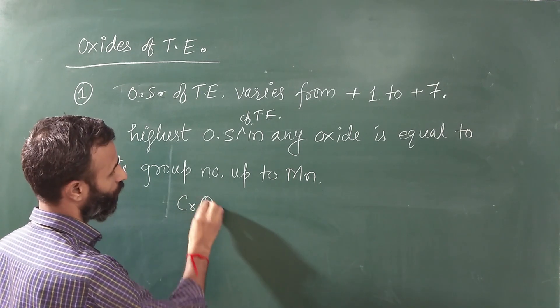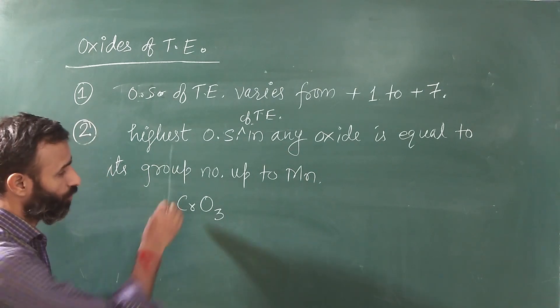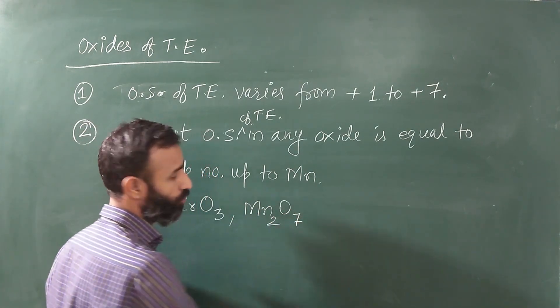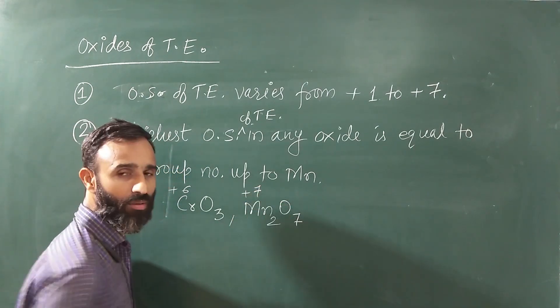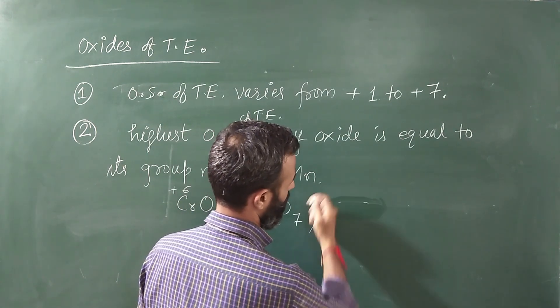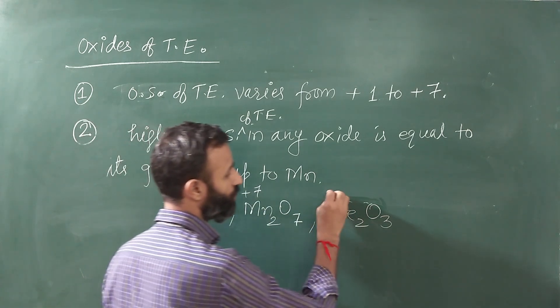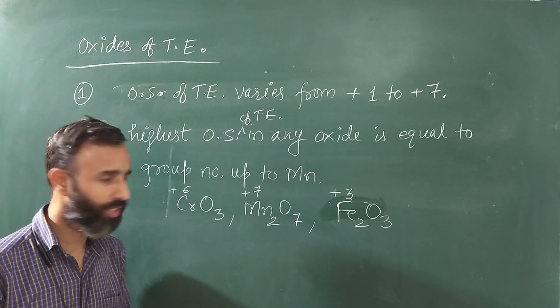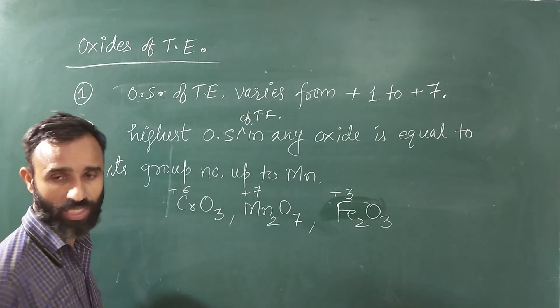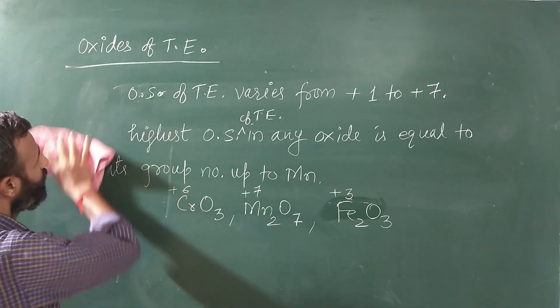Chromium's group number is 6. So chromium's highest oxide is CrO3, where chromium has oxidation number +6. But manganese is Mn2O7, where manganese has oxidation number +7. But iron is only Fe2O3, maximum oxidation number +3. So up to manganese it equals group number, but after that only Fe2O3.